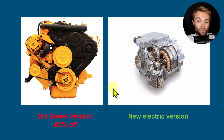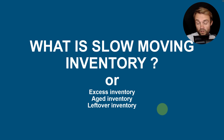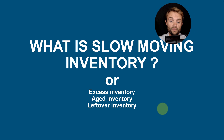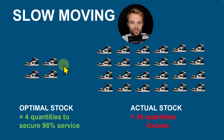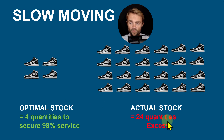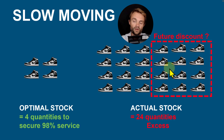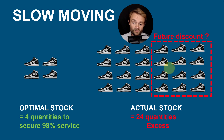Slow-moving inventory — also called excess, aged, or leftover inventory — is different. These are products you still need today, not discontinued. For example, Nike shoes in the current collection: your optimal stock might be 4 units to secure 88% service level, but your actual stock is 24. You have a lot of excess. That excess creates extra costs — extra logistics, future discounts — because you may have 6 months to 2 years of inventory and need to switch to the new collection.